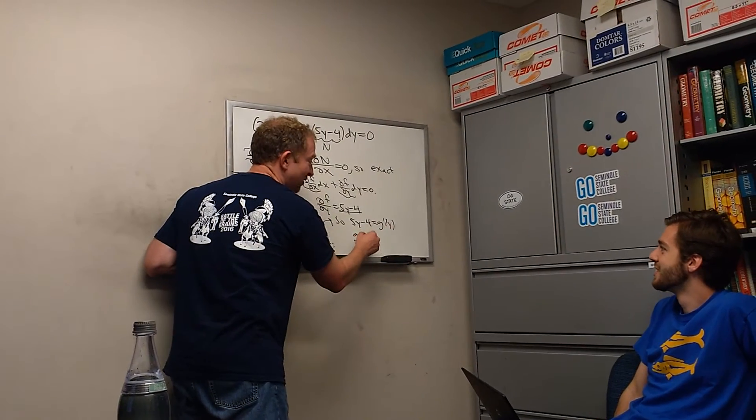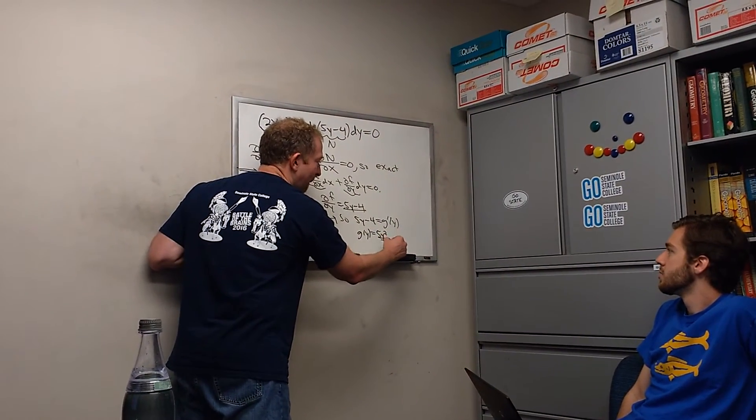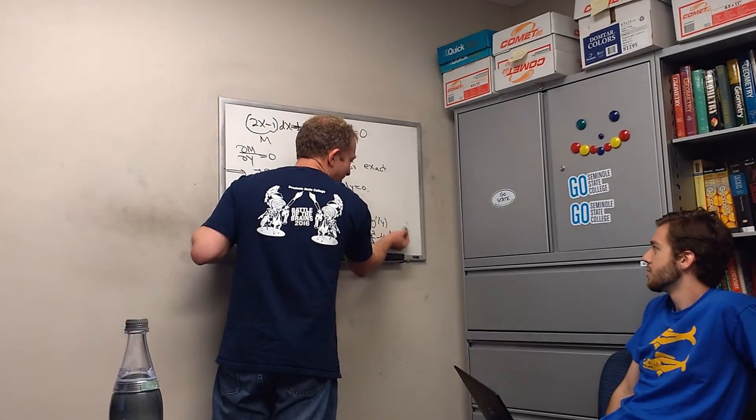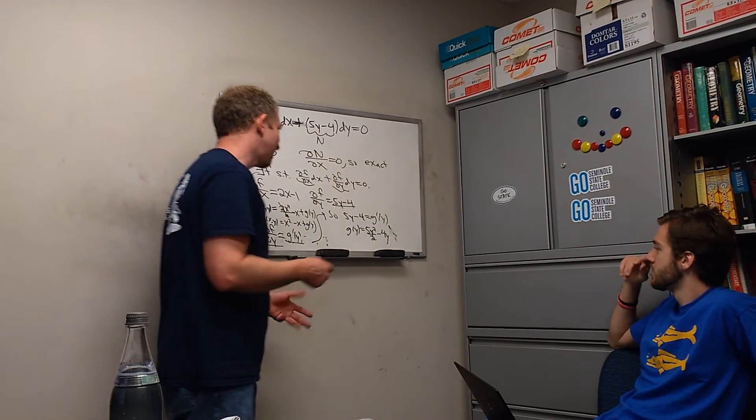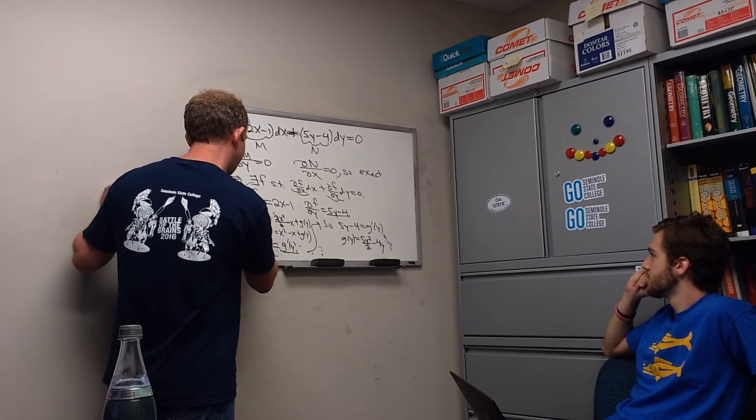So little g of y, you just integrate. You get 5y squared over 2 minus 4y. And then just add a constant. You don't have to add the constant, though. We'll add it at the end. Okay. It turns out, since I didn't show you how to come up with this, right? The final answer is as follows. It's just, you take your f, which is right here. Let me erase the original one.